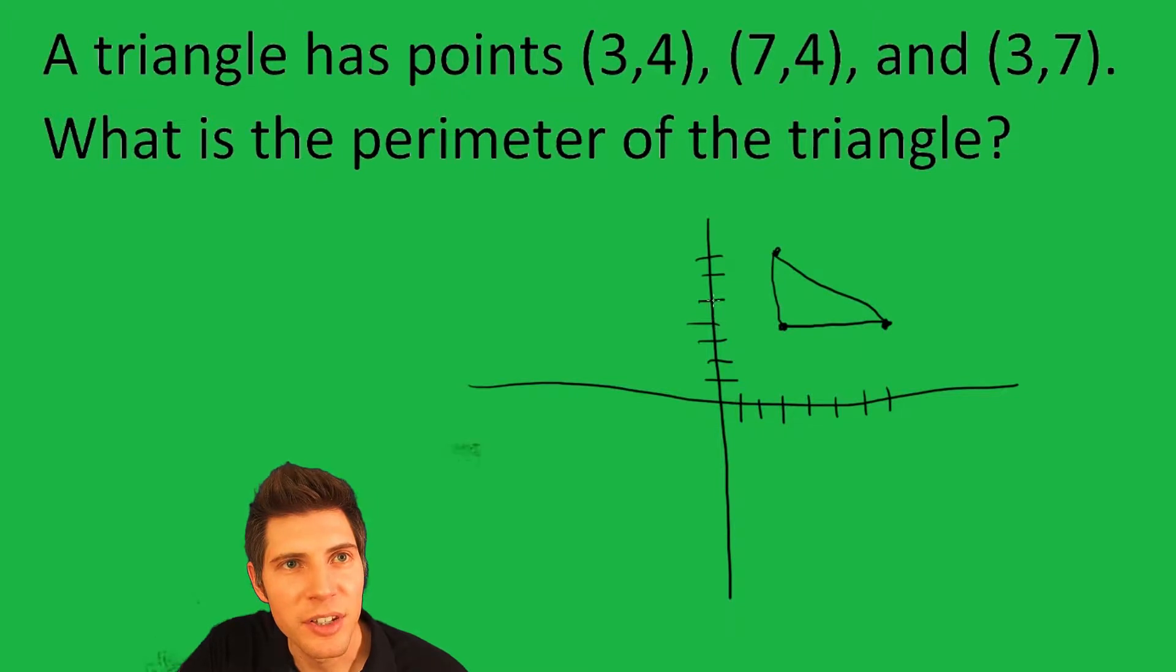They want to know what is the perimeter. Well, we can count this side: one, two, three. This side has a length of three. And we could count this side: one, two, three, four. It has a side length of four. Then we can do the Pythagorean theorem to get this last side.